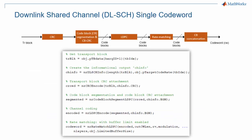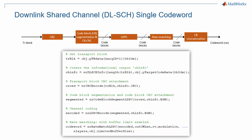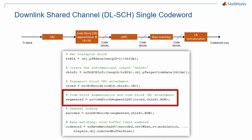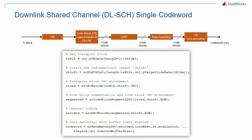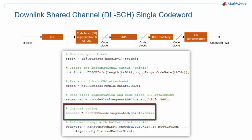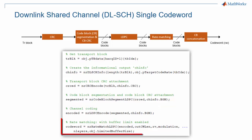Here you can see how every stage of the downlink shared channel processing is mapped to functions in MathWorks 5G Toolbox. You can recognize CRC encoding, code block segmentation, LDPC coding, and rate matching.